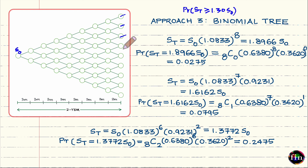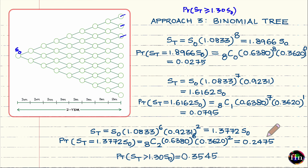Only these three nodes satisfy the condition S-T ≥ 1.3·S0. The total probability is the sum: 0.0275 + 0.0795 + 0.2475 = 0.3545. Although this is approximate, it is not far off — we are still getting roughly 35 percent, consistent with the results from Approaches 1 and 2.